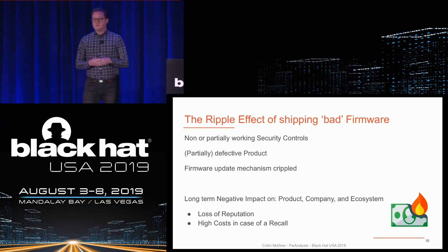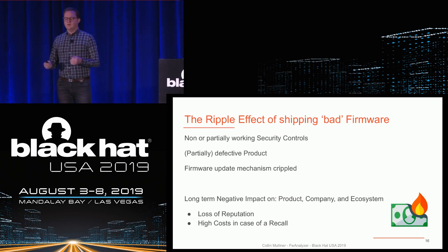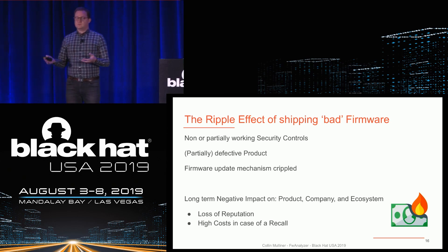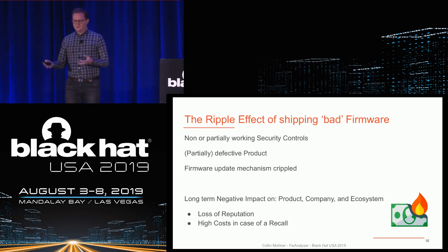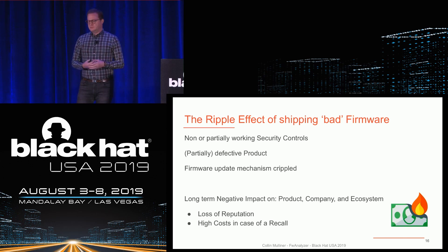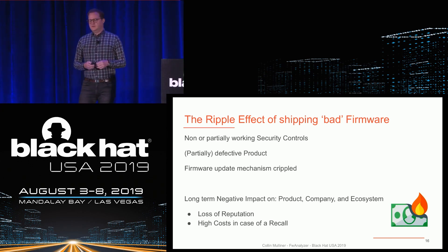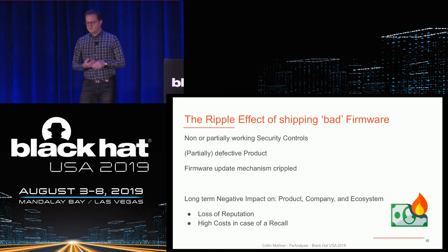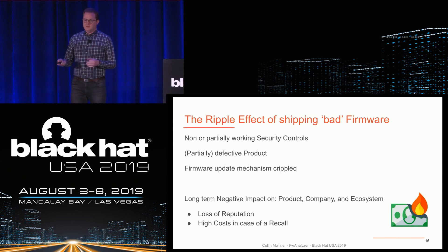One thing you really want to prevent is this ripple effect. If you ship something where you have none or only partial working security controls, maybe you ship a defective product because your security is so strong that certain things don't work — because you didn't test that a specific thing can read a file or access a specific network port. Or maybe you accidentally cripple your update because you ship wrong public keys. You really want to prevent this because it can create a really long-term negative effect on your product and company.